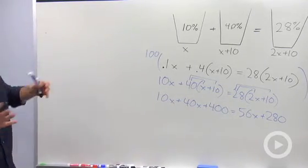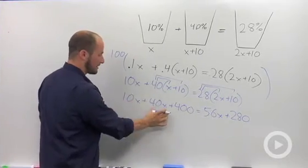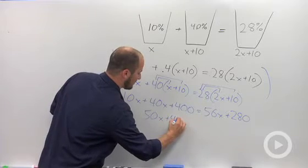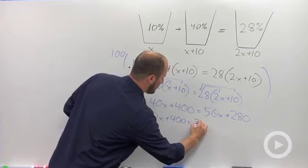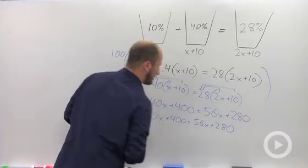Combine like terms on each side. So 10x plus 40x gives us 50x plus 400 equal to 56x plus 280.